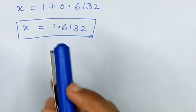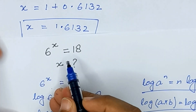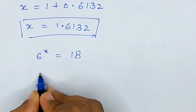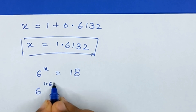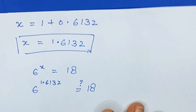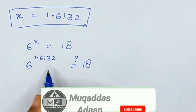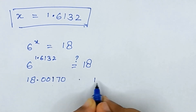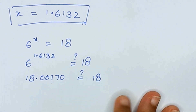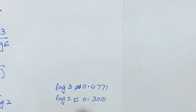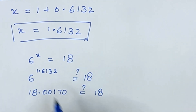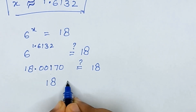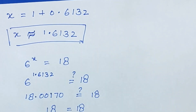Now we will check whether x = 1.6132 satisfies our given equation 6^x = 18. Calculating 6 raised to the power 1.6132 gives approximately 18.00170, which is equal to 18. Since the log values used were approximated, x is also an approximated value. Rounding gives 18, confirming the value of x satisfies the equation.